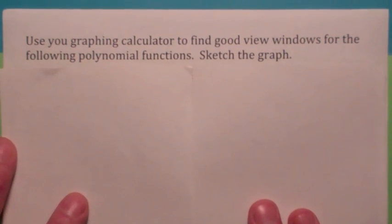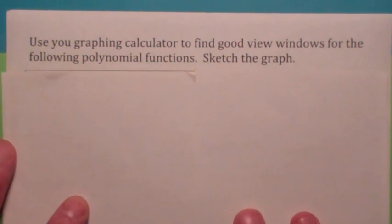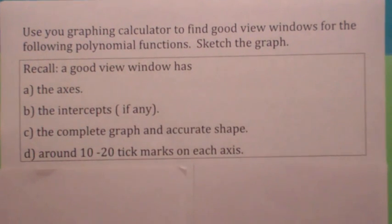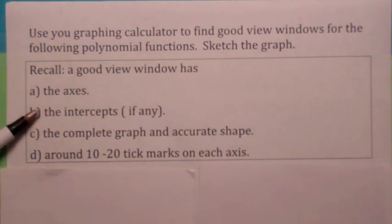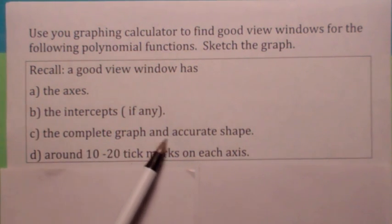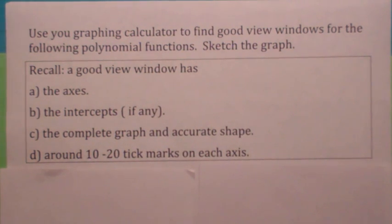Calculators are important in my class, and one thing that it's hard for students, I know, from 141 is just entering a function and getting a good window for it. So, let's practice that a little bit. In my class, what do I mean by a good view window? Well, I want to see the axes, x and y axis, if there's any x-intercepts I want to see it. Most importantly, I want to see the complete graph. If it has a bunch of squiggles in it, I don't want it to look like a line. And then about 10 to 20 tick marks on each axis.